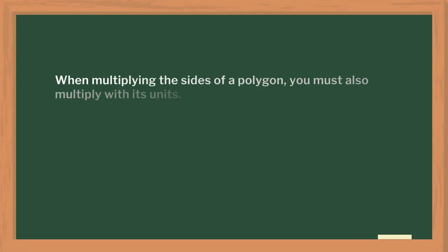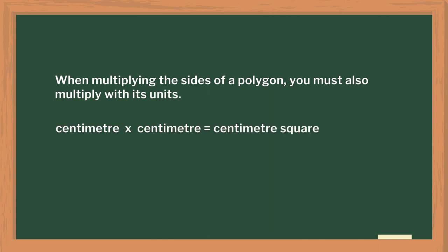It is important to focus on the units of area. Many students write it as centimeter instead of square centimeter. So I told my students: as you multiply the sides of the polygon, you also have to multiply the units. Centimeter multiplied by centimeter gives centimeter squared, written as square centimeter.